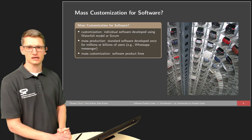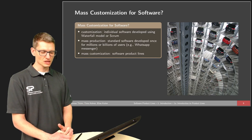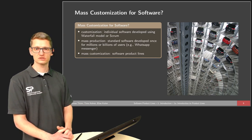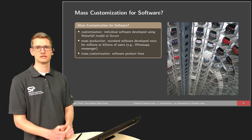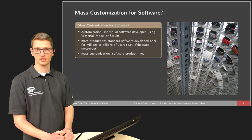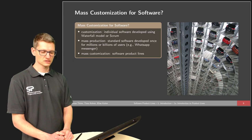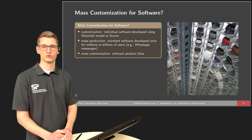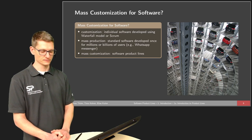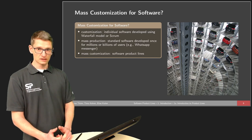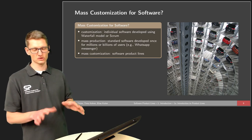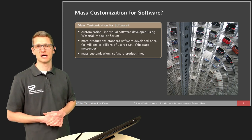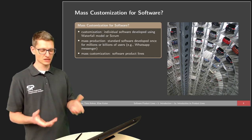Then we have mass production — using the same techniques like waterfall model or Scrum — where standard software is developed once for millions or even billions of users. One of the most installed mobile apps manually installed by humans is WhatsApp, for instance. About half the people in the world use certain apps in the Android market space. Then we have mass customization, and when it comes to software we talk about software product lines — the more common term in the software domain.